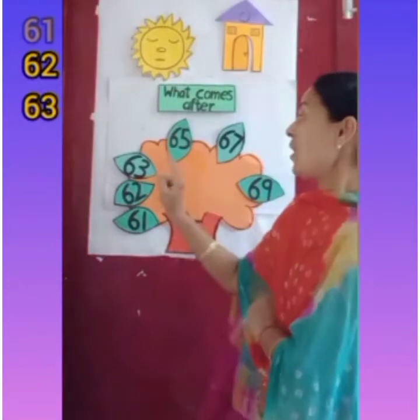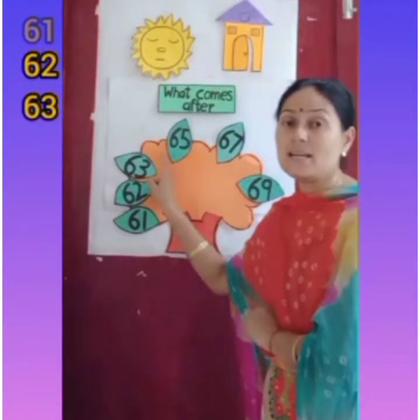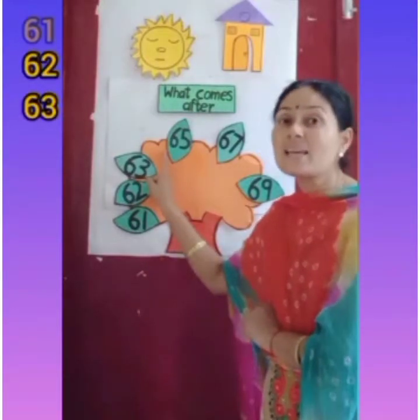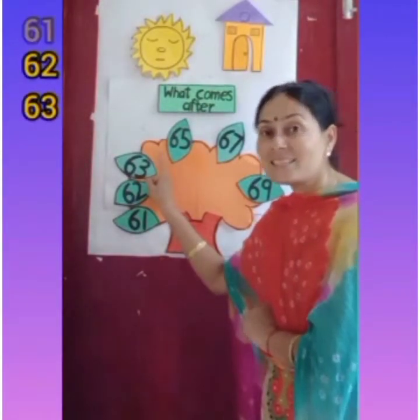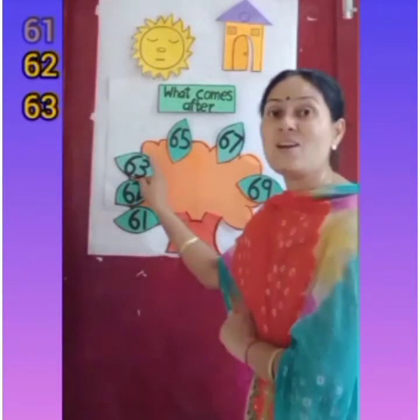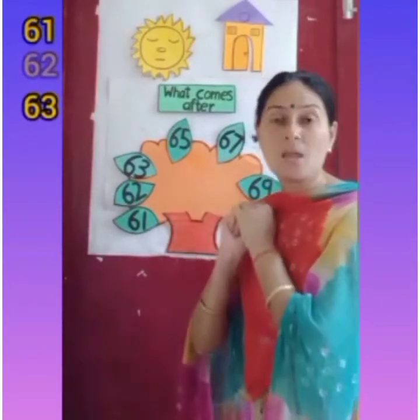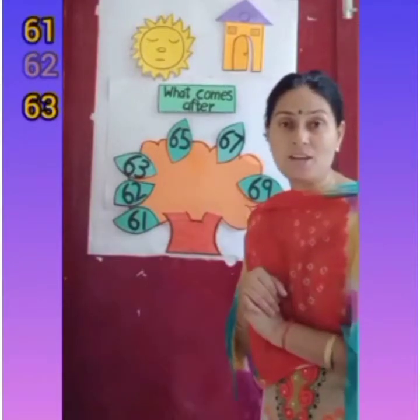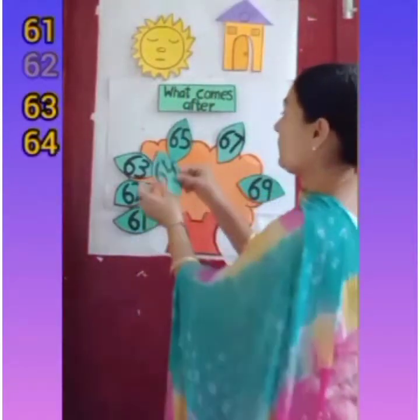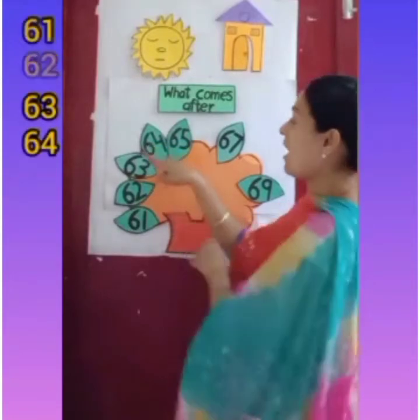Now tell me, what comes after 63? The after number is missing, right? 63 ke baad jo number hai woh missing hai — because due to the wind, the number after 63 flew away. So tell me, what comes after 63? 63, after is 64! Yes — 63 and the after number is 64. So 64 will come here after 63.